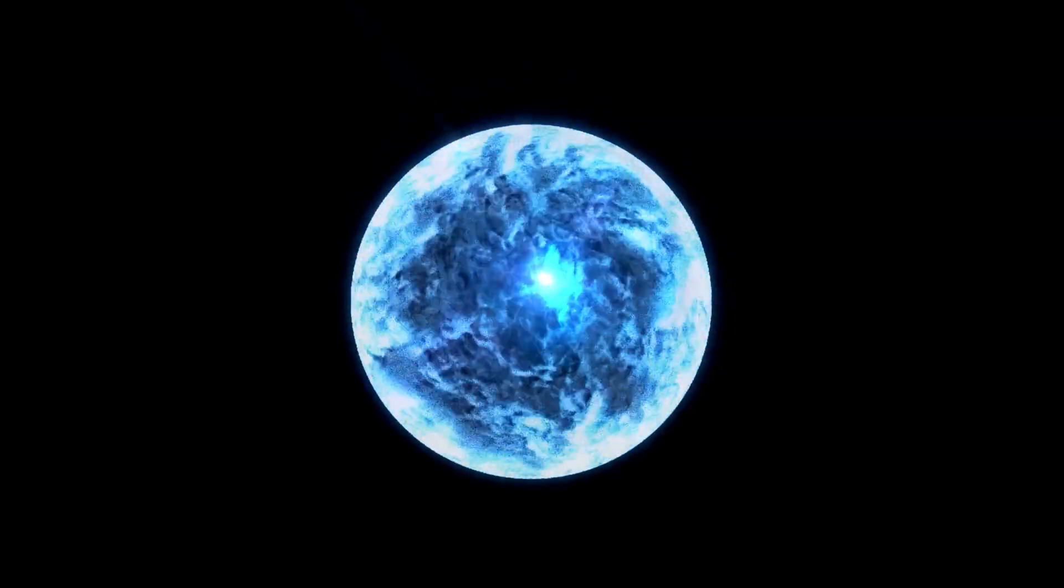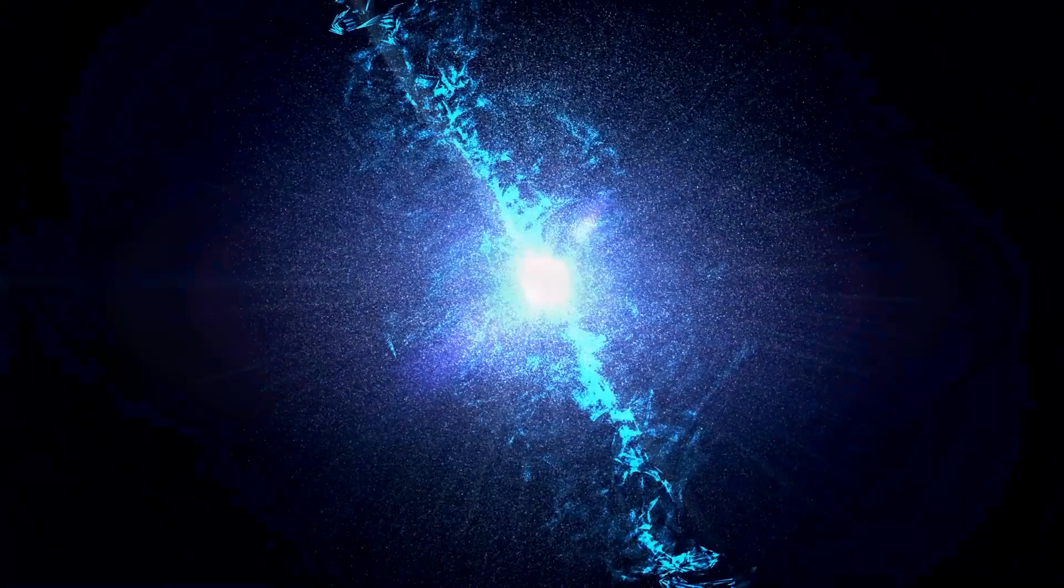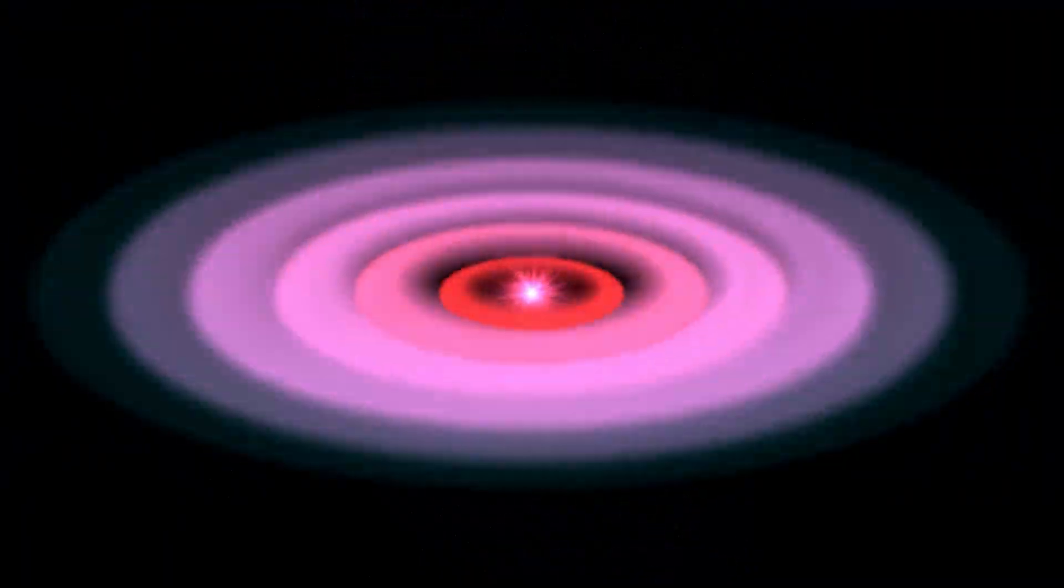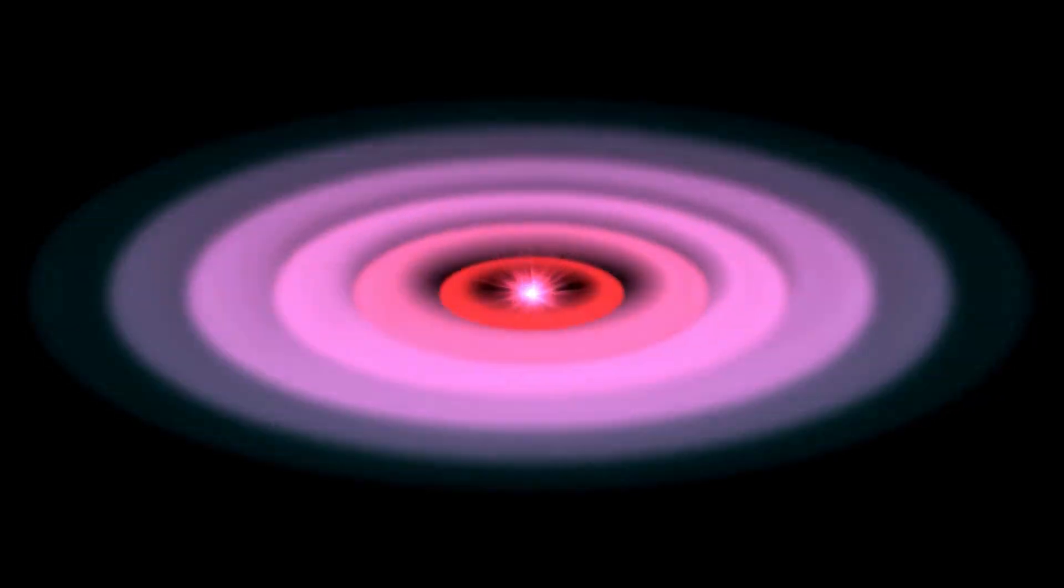NGC 6397b is only visible when the pulsar is on the side of its orbit that is closest to the observer. It has the longest measured orbital period of any GC eclipsing binary, at 1.97 days.